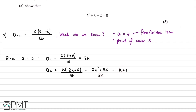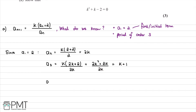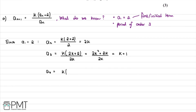We repeat this process to find the fourth term. a4 equals k multiplied by a3 (which is k + 1) plus 2, divided by k + 1. This simplifies to k(k + 3) divided by k + 1.